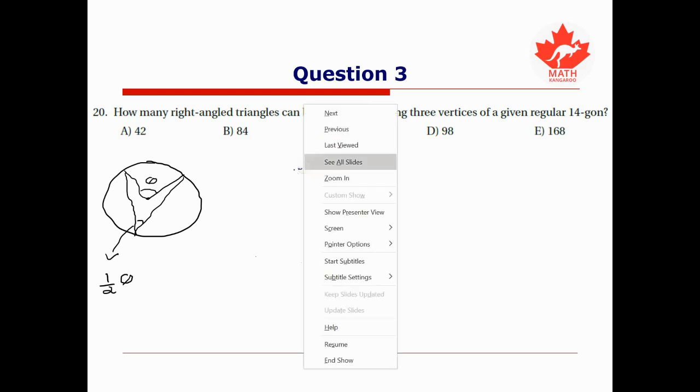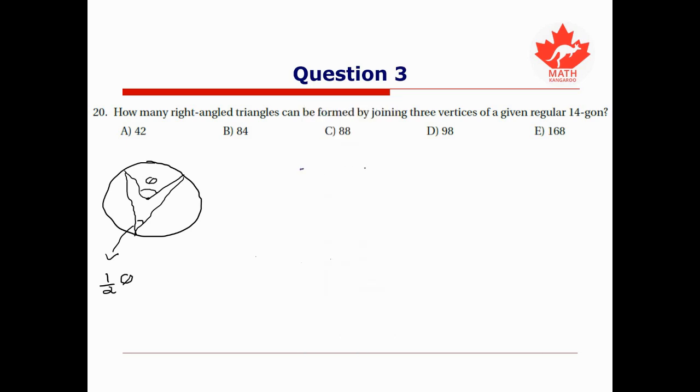So in this question, we're dealing with some 14-gon. So I imagine, right, I'm going to have 14 vertices and 14 edges, and they're all going to have the same angle and lengths because it's a regular 14-gon. So I'm not going to draw all of it, but we have all these lengths and angles. Now we can make all sorts of triangles by just joining random vertices together, but we want to create right angle triangles.